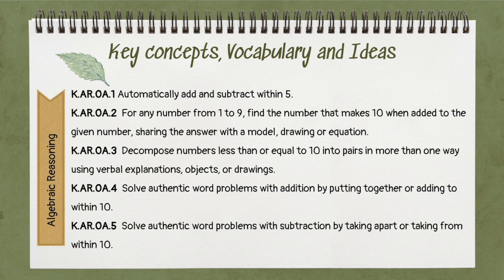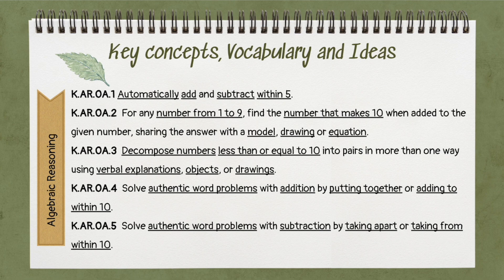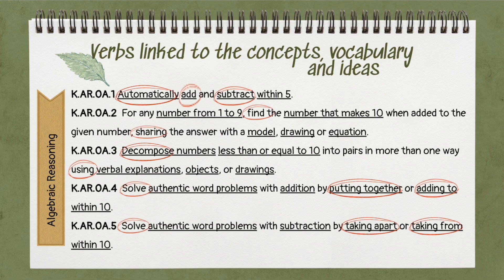Moving into the category of algebraic reasoning, we've got operations and algebraic thinking as the subcategory, with five standards. The first thing I'll do is underline the key concepts, vocabulary, and ideas: automatically, add, subtract, within 5, number from 1 to 9, number that makes 10, model, drawing, equation, decompose numbers, less than or equal to 10, verbal explanations, objects, drawing, authentic word problems, addition, put together, add to 10, authentic word problems, subtract, take apart, take from, within 10. From here we'll circle the verbs: automatically, add, subtract, find, share, decompose, use, solve, put together, take apart, adding to, taking from — these are all our action verbs representing what students need to be able to do with the content.